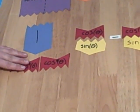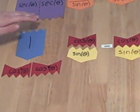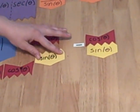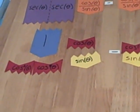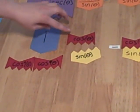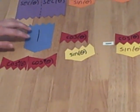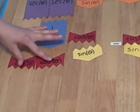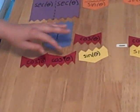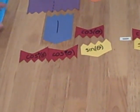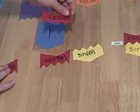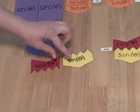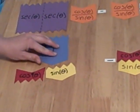Now we have one divided by cosine times cosine times cosine divided by sine. Because our numerators are just being multiplied together, we can combine these fractions into one times cosine times cosine times cosine divided by sine. And we can now see that we can remove a cosine out of our numerator and denominator to be left with one divided by cosine times sine.